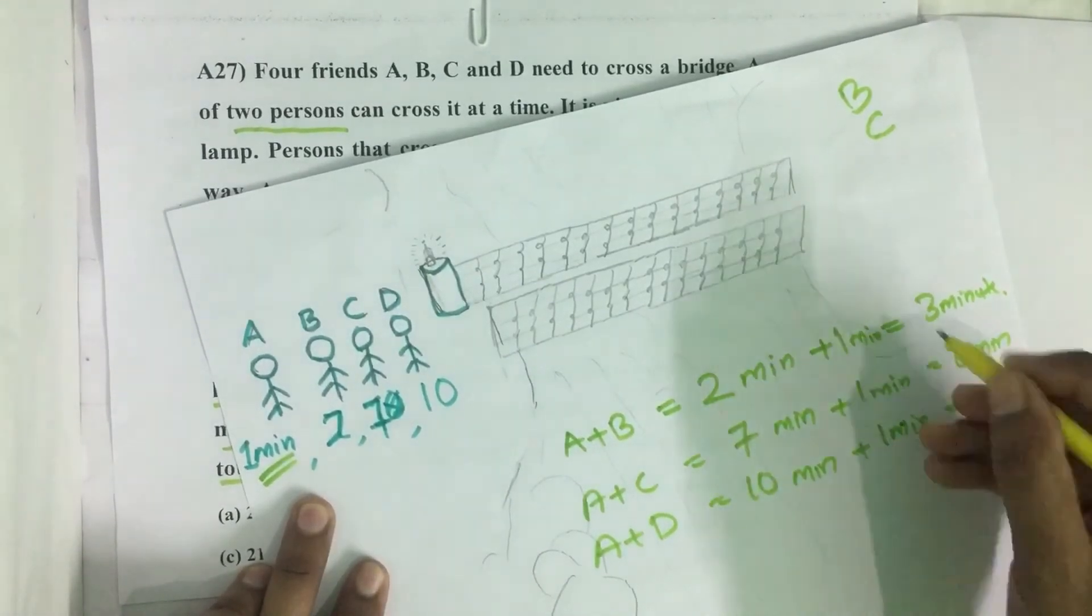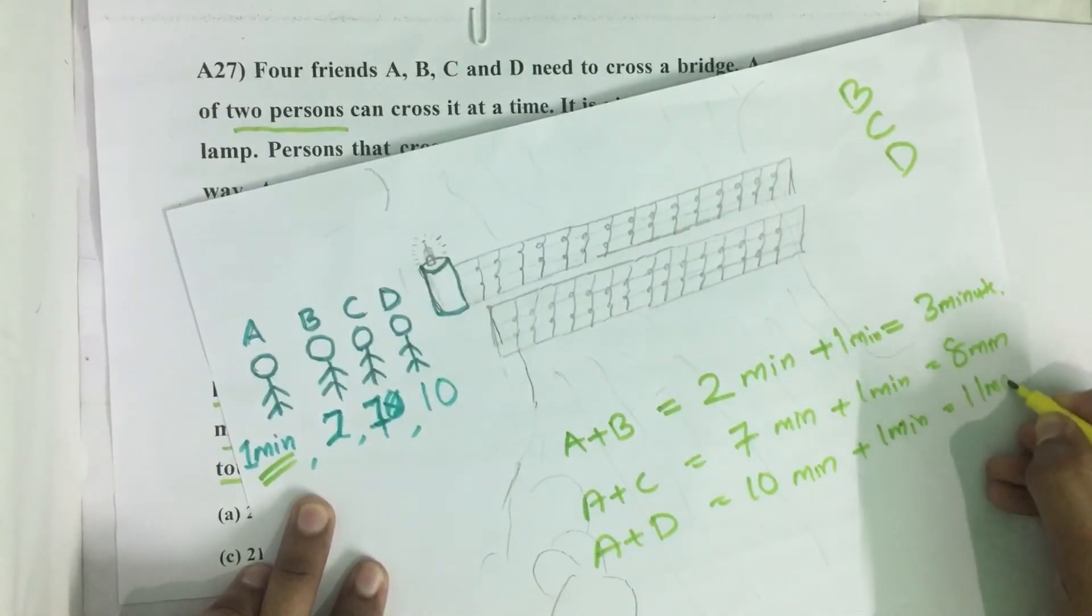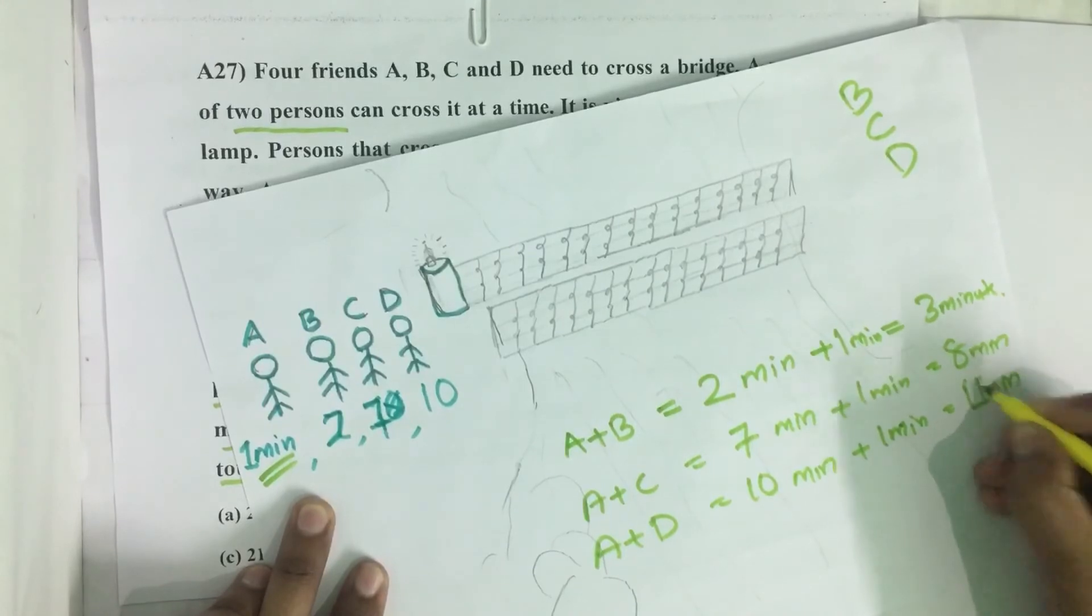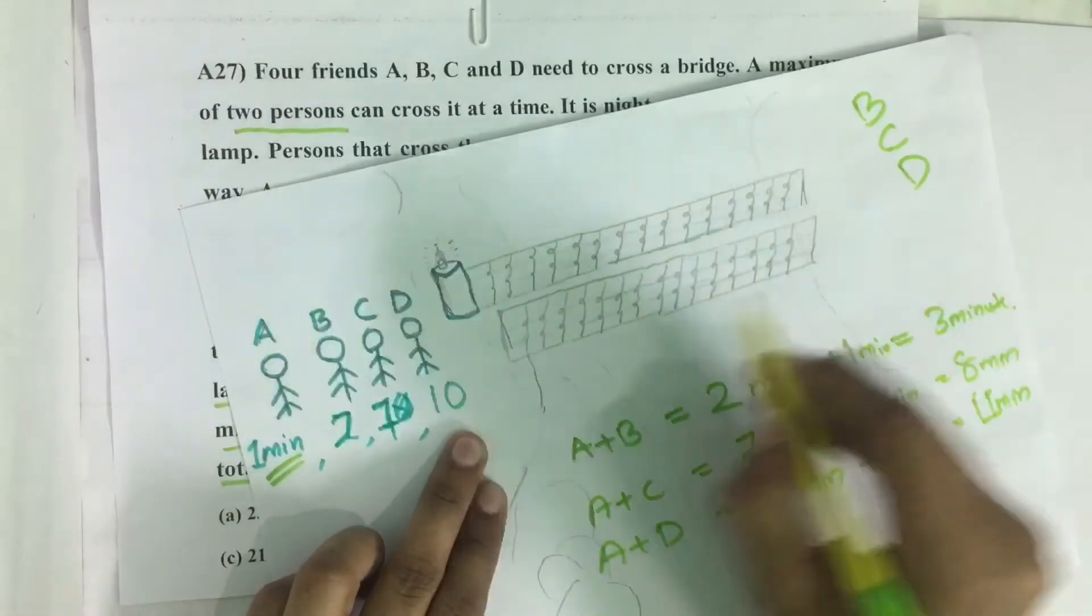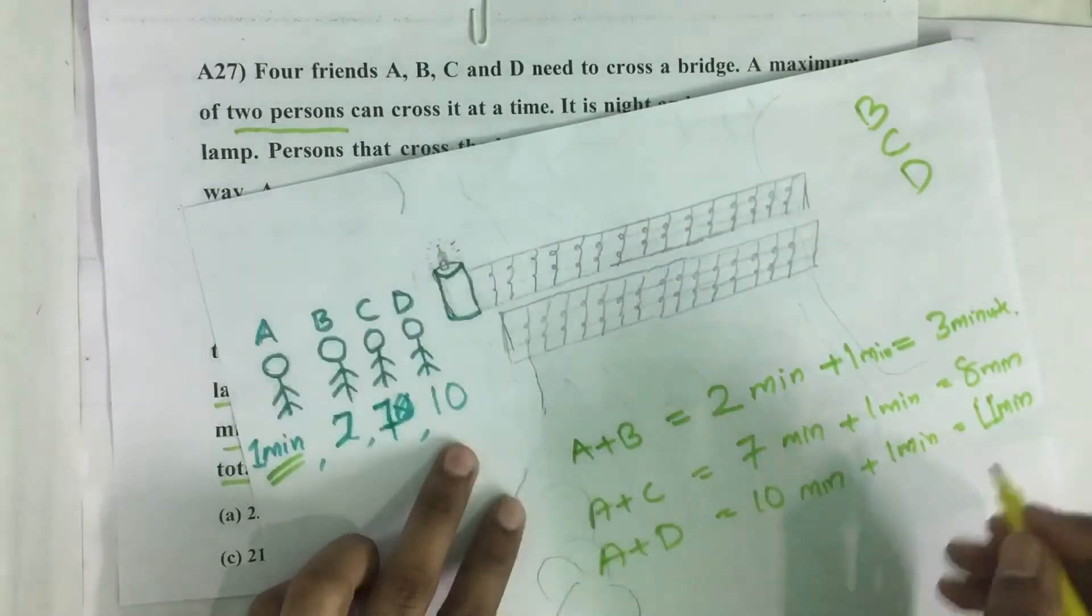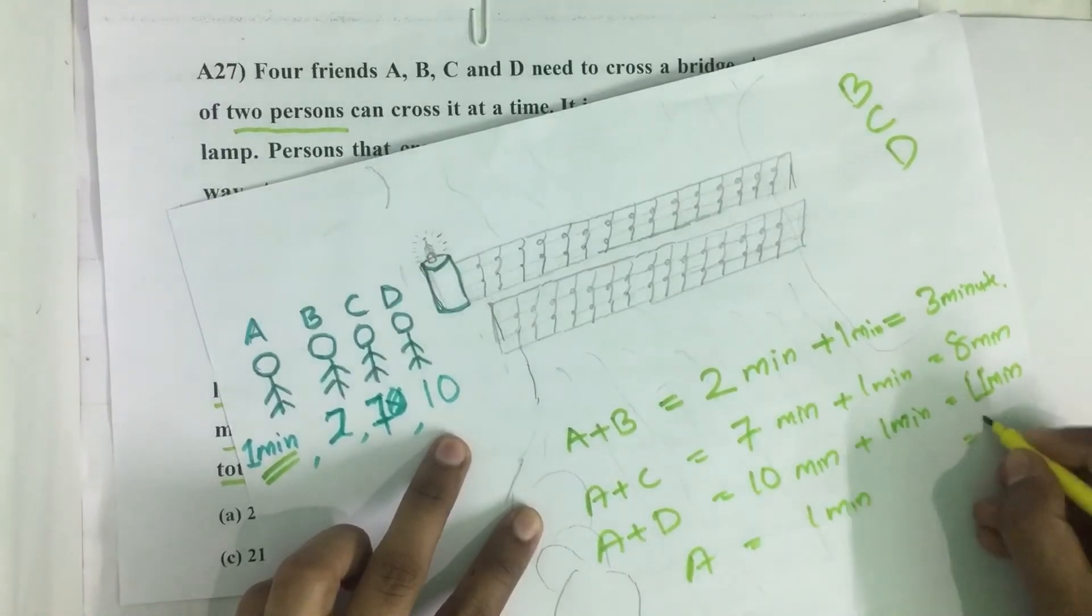Now D also reached here, the total is eleven minutes. Then finally now A is here, he has to reach here without lamp. It takes one minute for him.